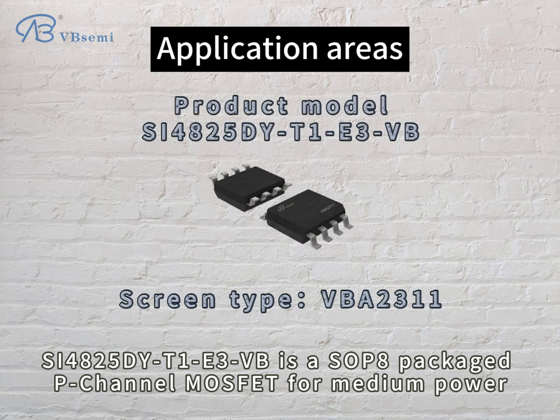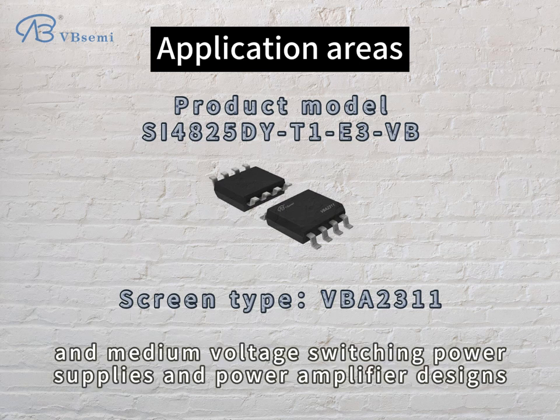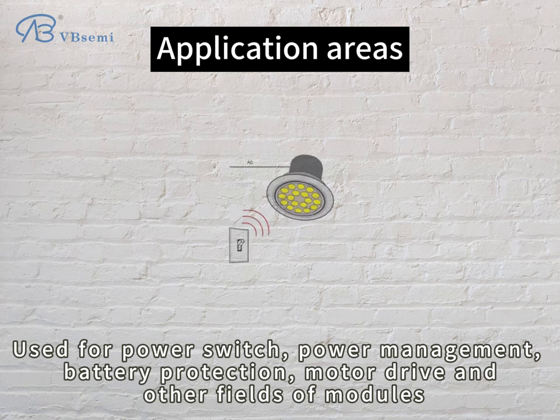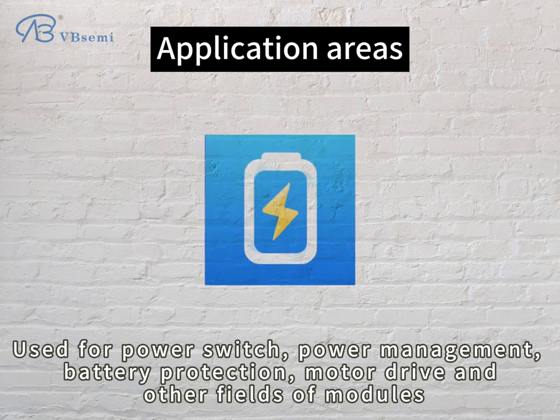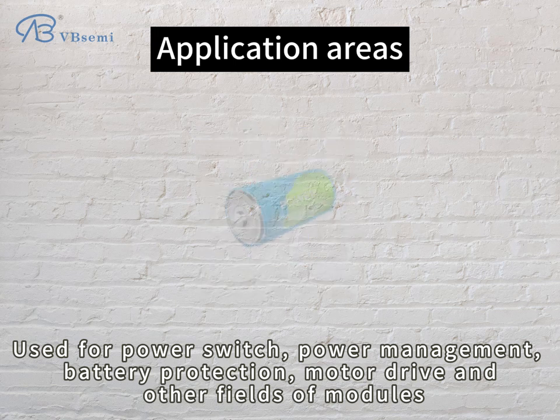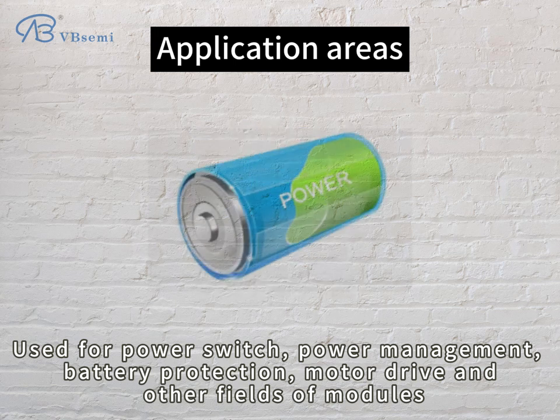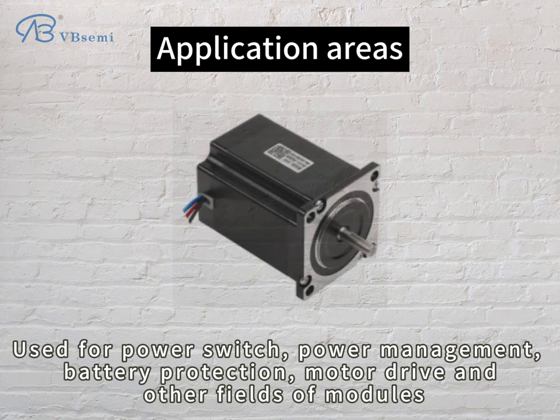SI4825 by TE3VB is a soft bar-packaged P-channel MOSFET for medium power and medium voltage switching power supplies and power amplifier designs. It is used for power switch, power management, battery protection, motor drive, and other fields of modules.